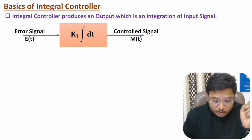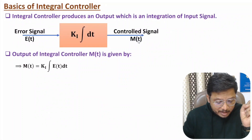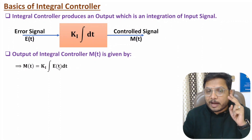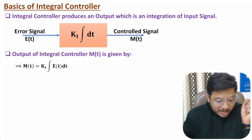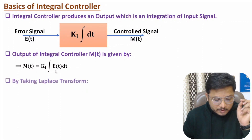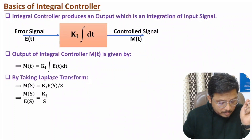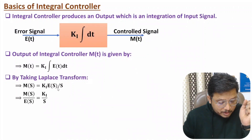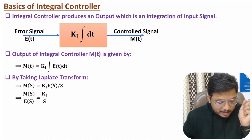With an integral controller, the output m(t) equals constant Ki multiplied by the integration of the input error signal e(t). To analyze in the frequency domain, we apply the Laplace transform. The Laplace transform of a single integration is 1/s, so m(s) equals Ki times e(s) times 1/s.